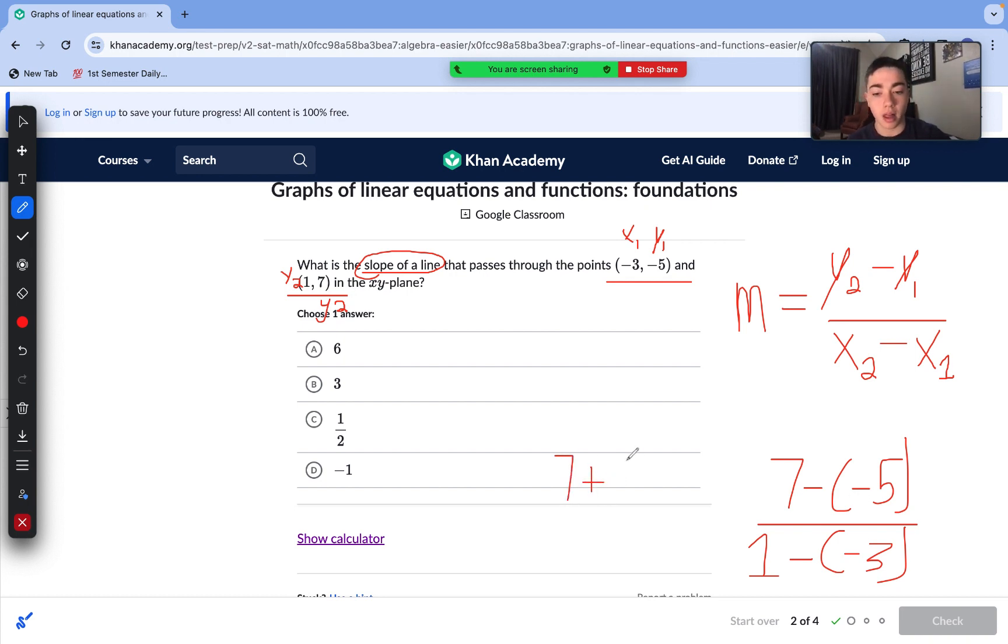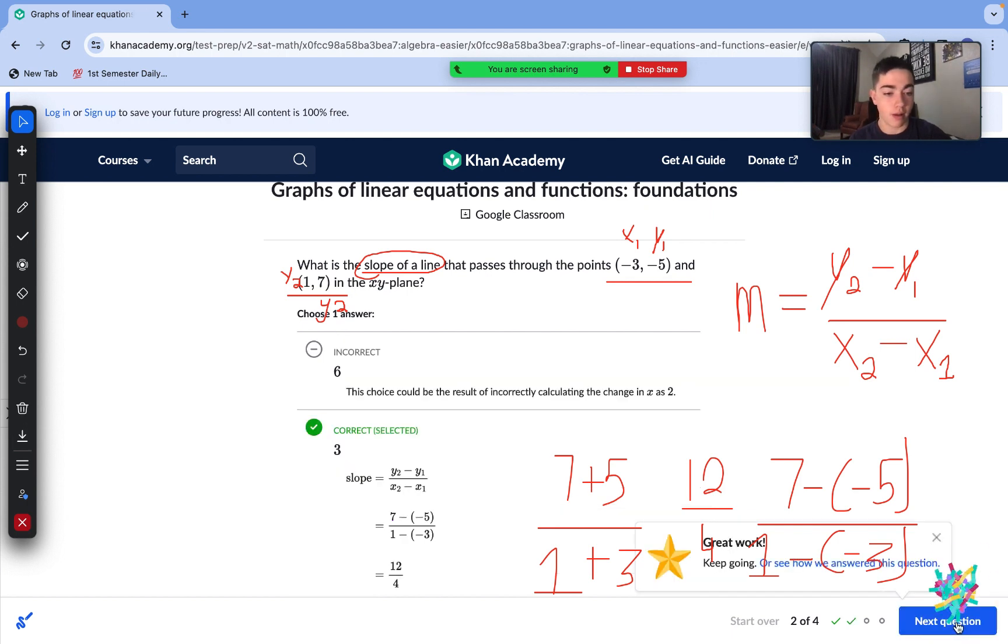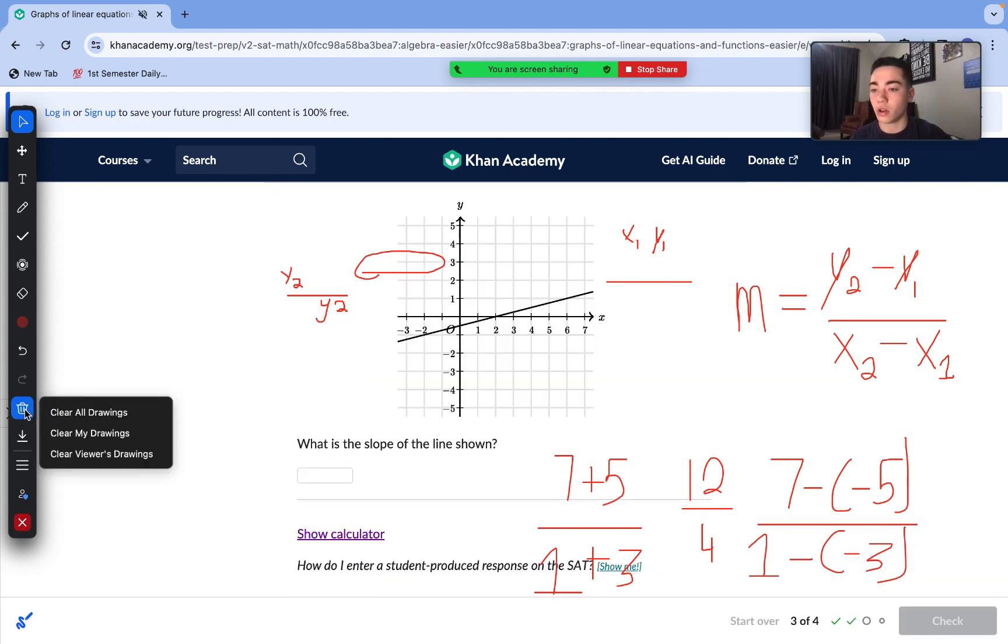So, we are left with 7 plus 5 over 1 plus 3. 7 plus 5, that's 12. 1 plus 3 is 4. 12 divided by 4 is 3. So, that's how we use our slope formula.